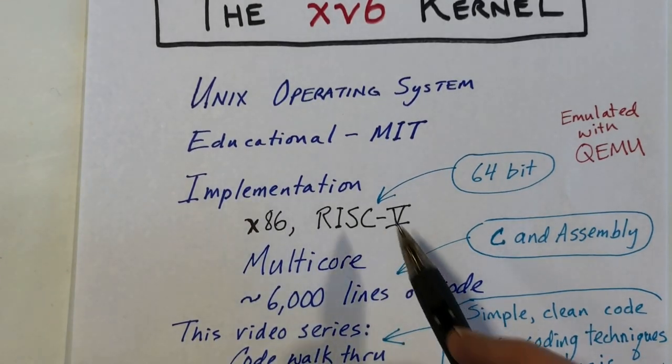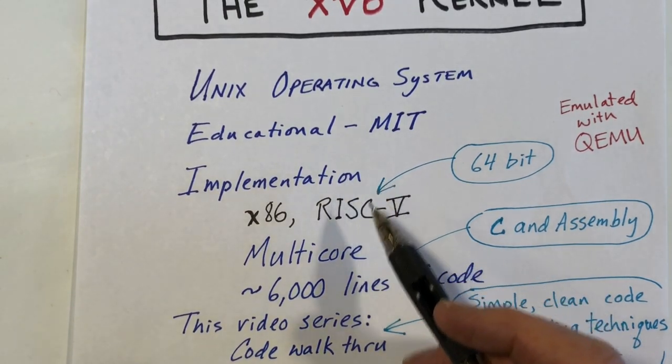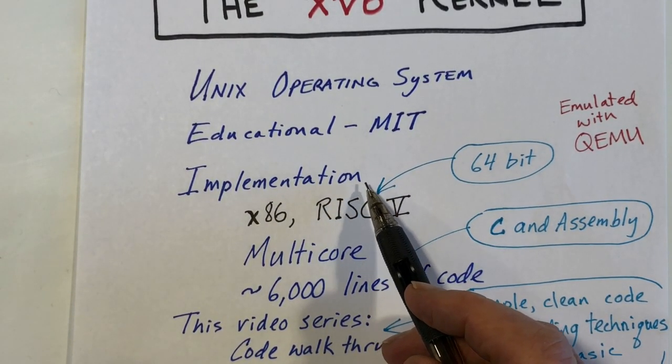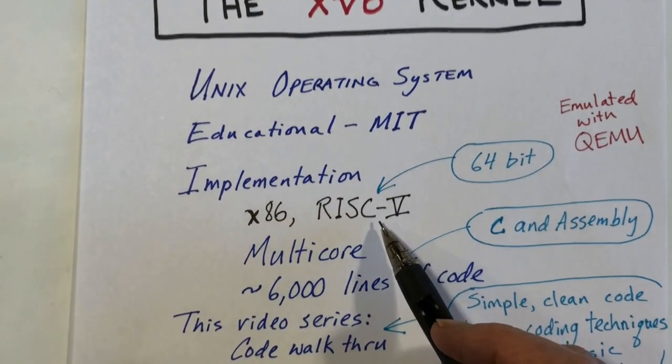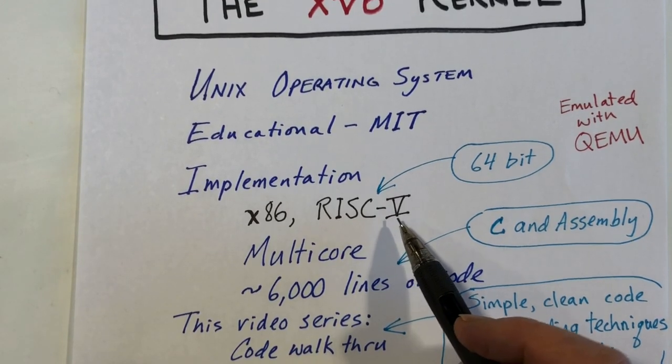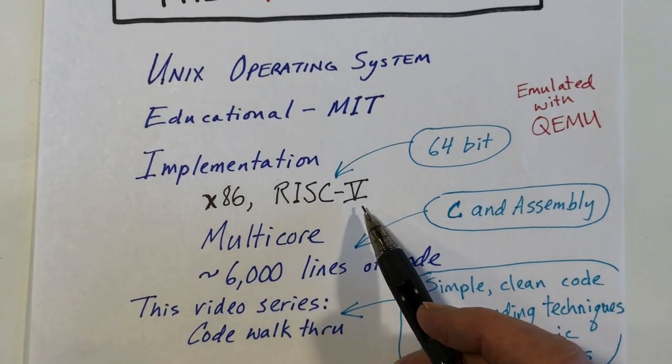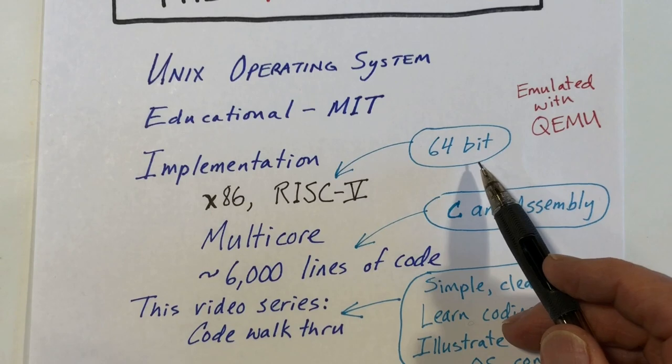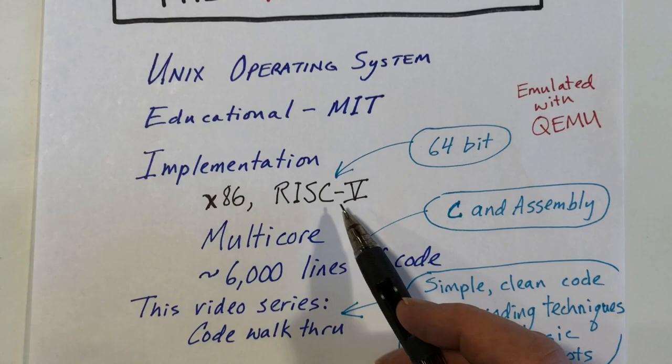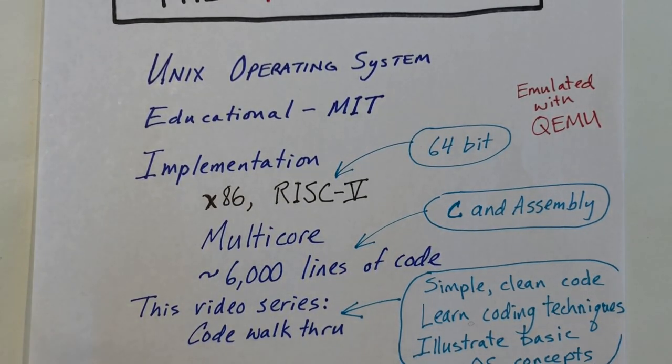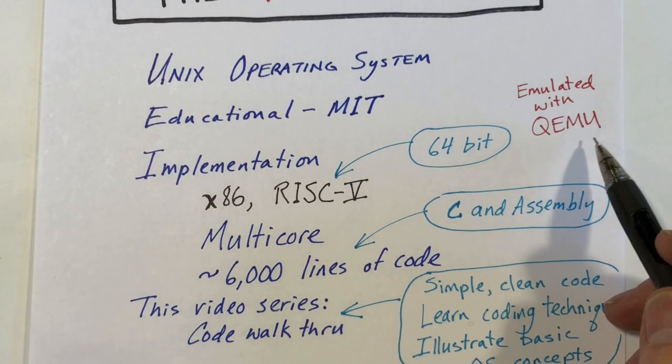This is an operating system that's used by students, primarily in an operating system course, and there are two implementations of this kernel, one for the X86 architecture and one for the RISC-V architecture. In this series of videos, I'm going to be talking about the RISC-V version. The RISC-V version that is used is a 64-bit processor, and whether you're using the X86 version or the RISC-V version, you're probably going to be using it in an emulated fashion, using an emulator like QEMU.